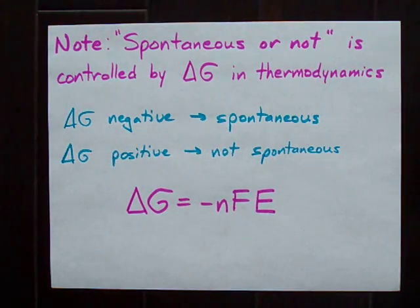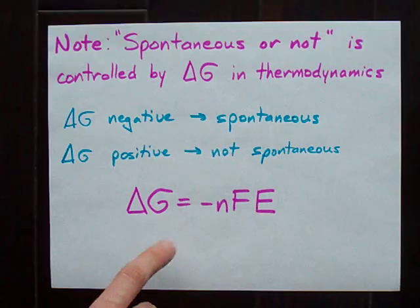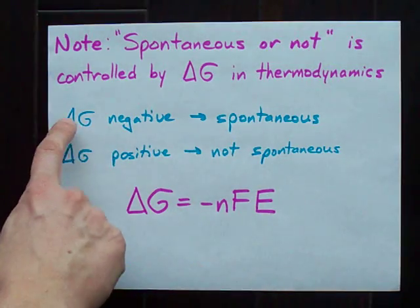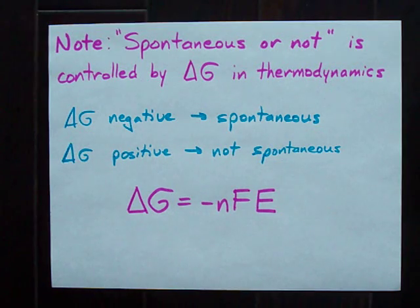What you'll notice is that there's a negative out front here, which means that a positive E cell makes delta G negative. And according to thermodynamics, a negative Gibbs free energy will give you a spontaneous reaction.